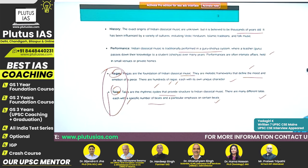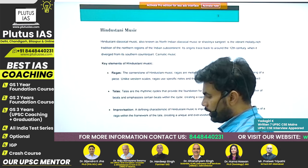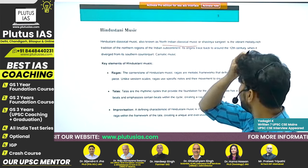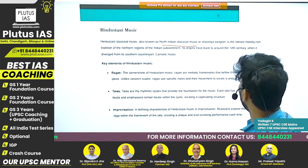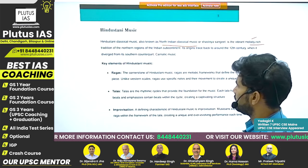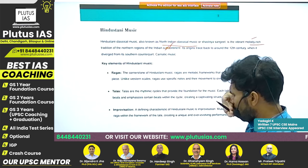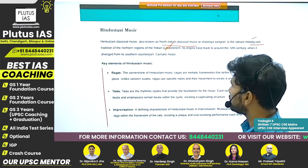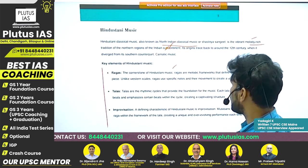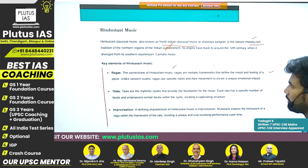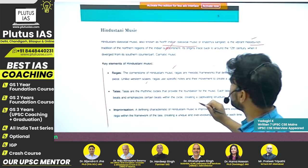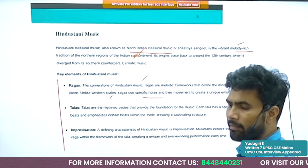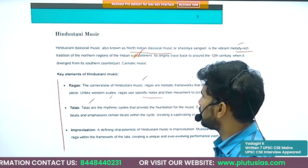Tala and raga are the two important foundational aspects of both Hindustani and Carnatic music. Hindustani music is especially associated with north India and is a vibrant, melody-rich tradition. The cornerstone of Hindustani music is the raga — melodic frameworks that define the mood and feeling. Unlike western scales, ragas use specific notes and their movement to create a unique emotional impact.